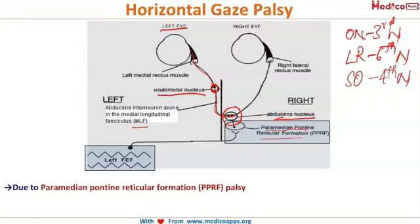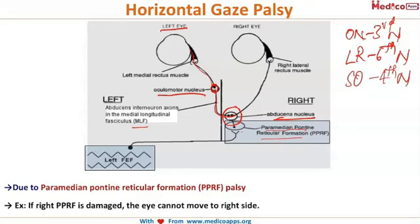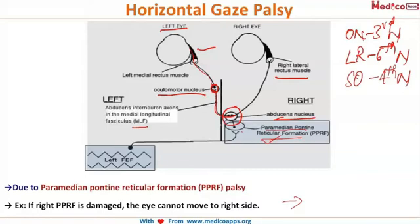This relay happens in the paramedian pontine reticular formation. When there is a palsy of the PPRF — say the right side PPRF is damaged — the eye cannot move to the right side. That means the lateral rectus of the right side and the medial rectus of the left side are both impaired. Both of these must contract for you to look to your right. Your right eye abducts and your left eye adducts when looking right. When the PPRF is damaged, you cannot look to that side — that is horizontal gaze palsy.